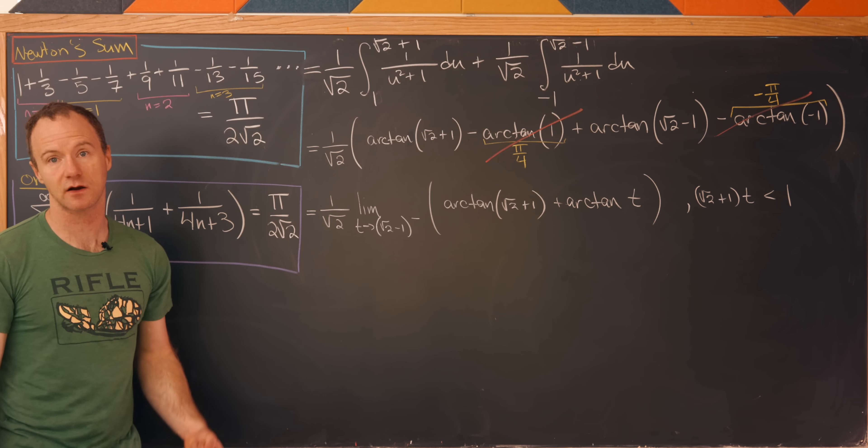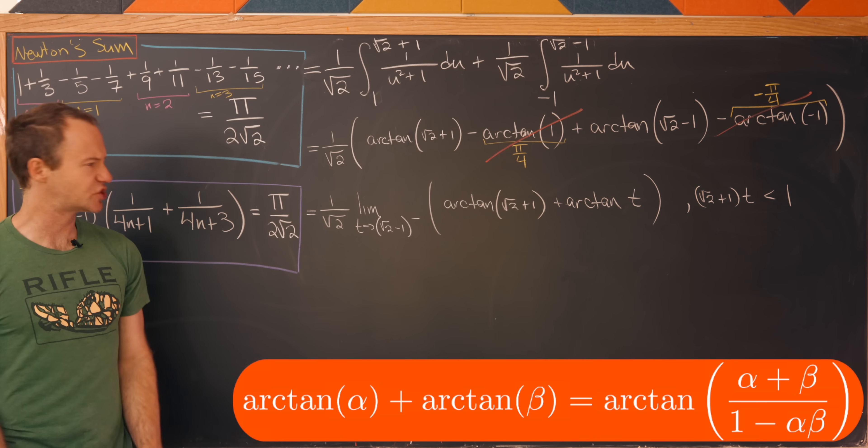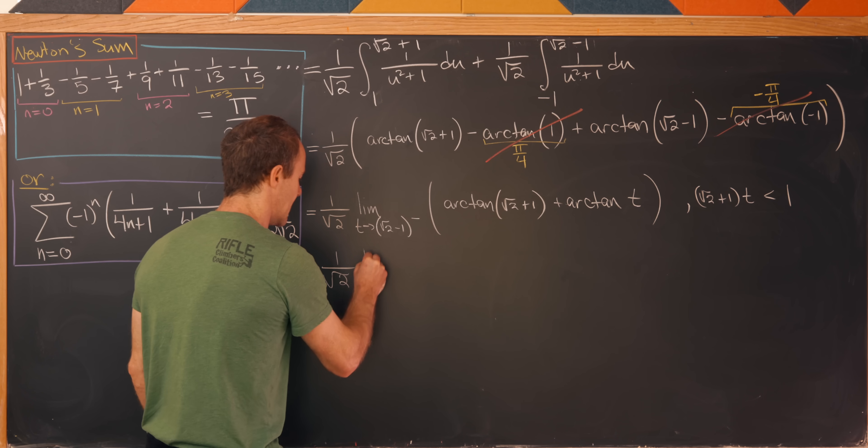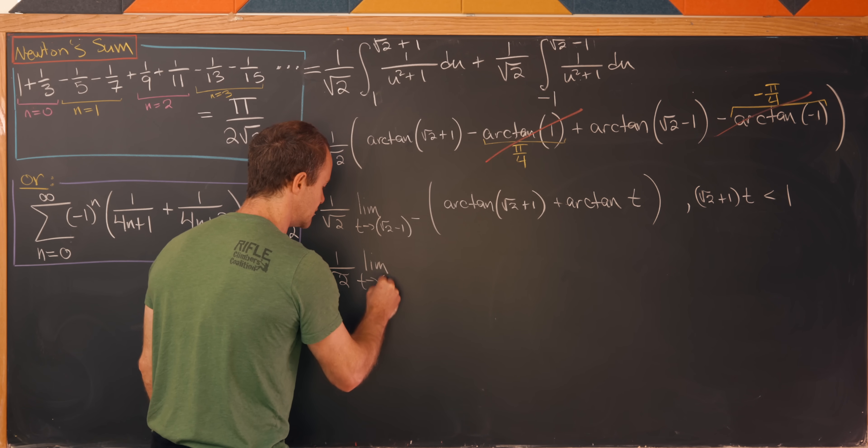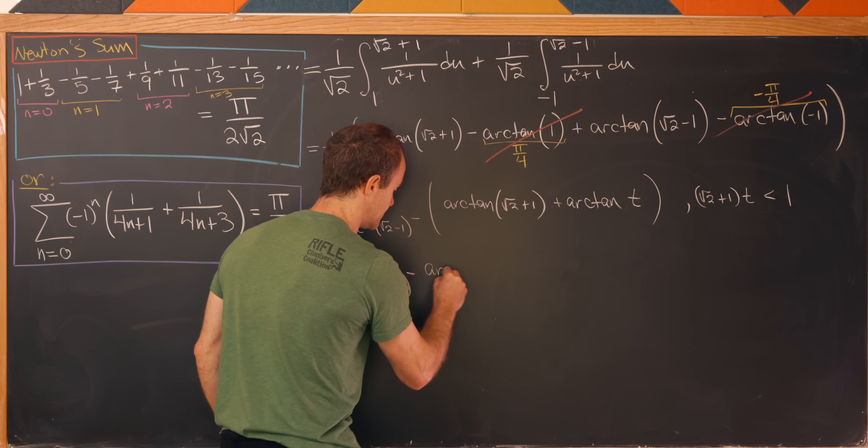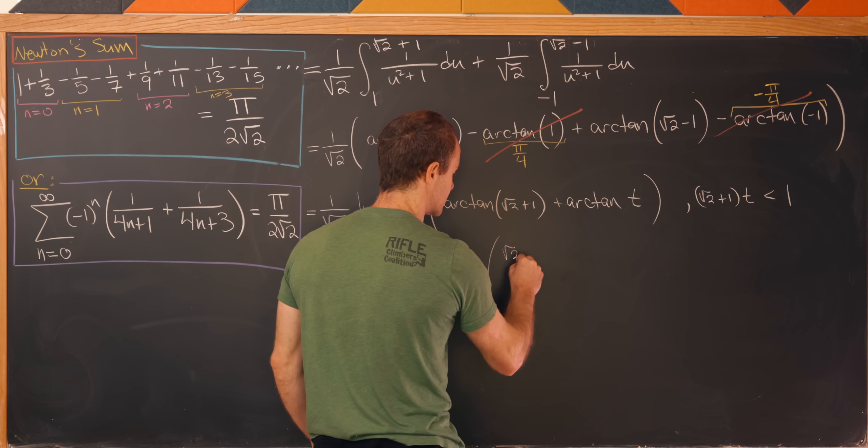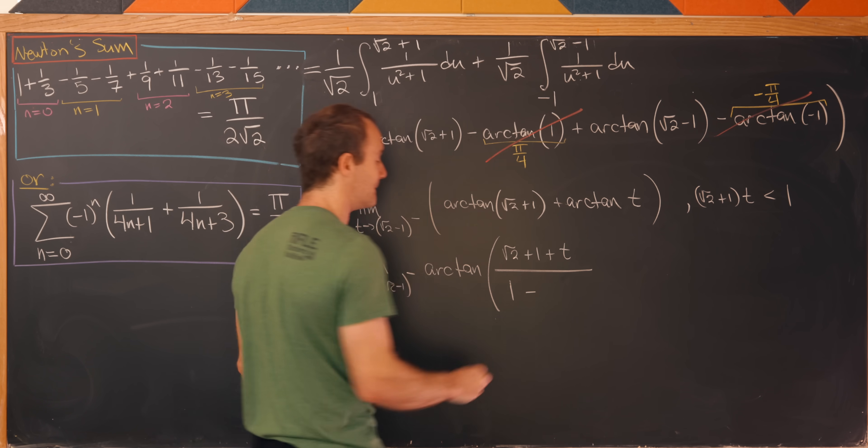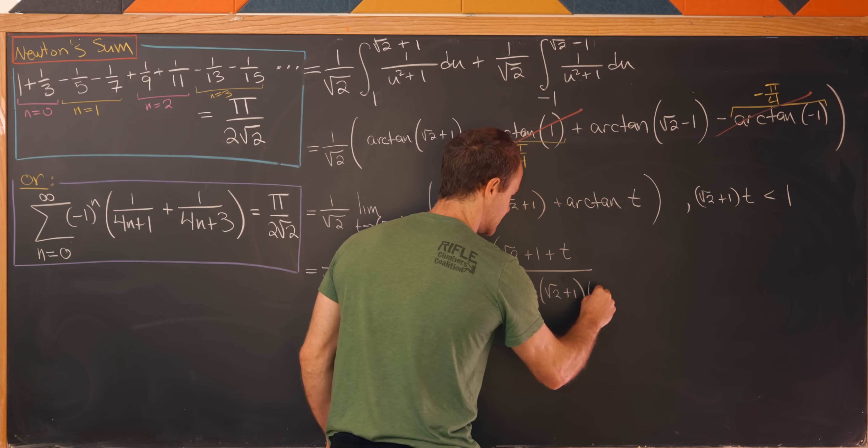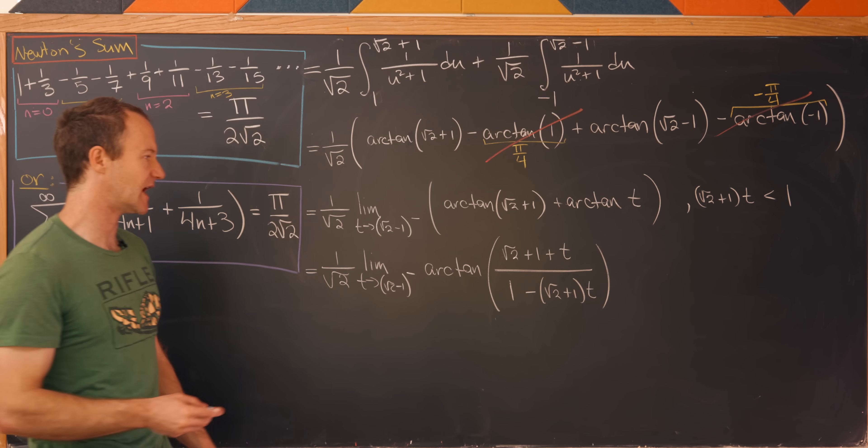But now since that product is less than 1 in our current situation, we can use the sum identity for the inverse tangent function, which should be on the screen right now. And that allows us to rewrite this as 1/√2, and then we'll have the limit as t goes to √2 - 1 from below of the arctan of, like we saw on the screen, the sum of these two. So that's (√2 + 1 + t) and then 1 minus the product of these two, so that'll be (√2 + 1)·t.